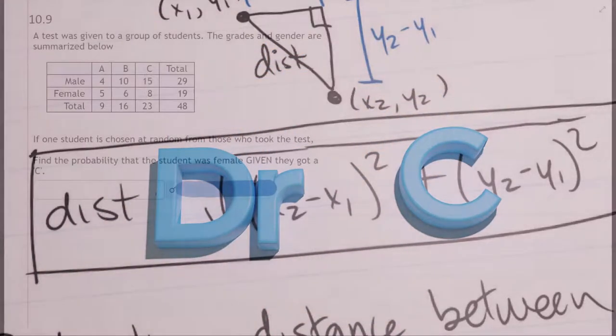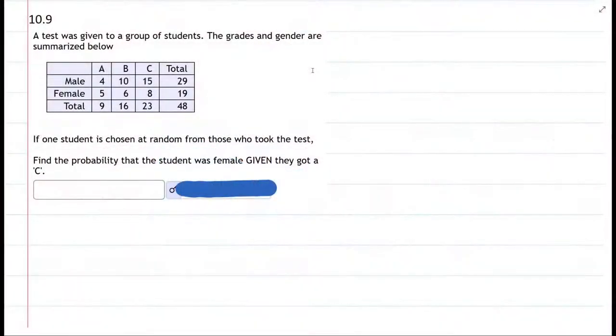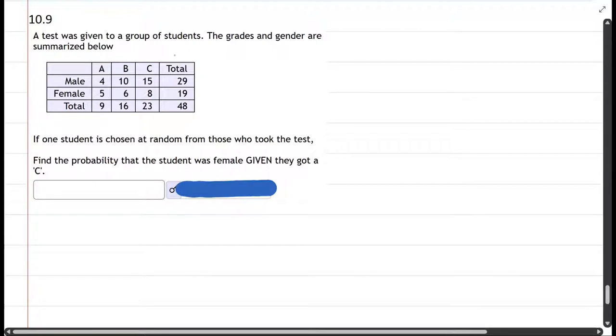This problem we have a test given to lots of students. We have grades represented by columns and genders represented by rows, and we need to think about one student chosen at random from those who took the test. We want to find the probability that the student was female given they got a C.